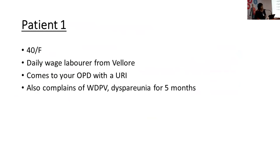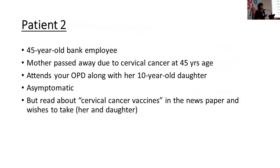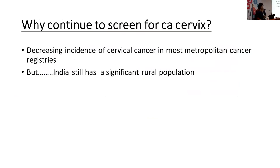Moving to cervical cancer: a 40-year-old with white discharge and dyspareunia should have a Pap smear and gynecological examination. A second patient — 45 years old, asymptomatic, mother died of cervical cancer — comes wanting information about the cervical cancer vaccine and also wishes to vaccinate her 10-year-old daughter.